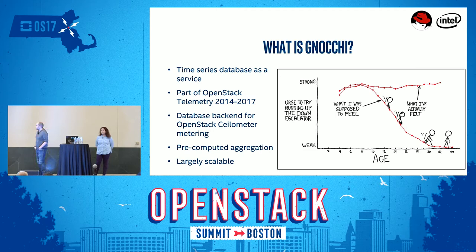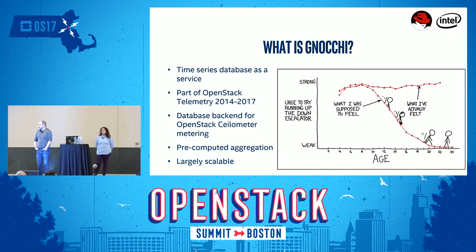So first, I'd like to talk a little bit about Gnocchi — what is it and what is its purpose? It's an OpenStack project that has been created three years ago, so I guess most of you have heard at least a bit about it. It left OpenStack officially a couple of months ago, but that doesn't make it useless. It's now independent and developed outside of OpenStack. It's the main backend for OpenStack Ceilometer, which used to store its data in its own database and now leverages Gnocchi instead.